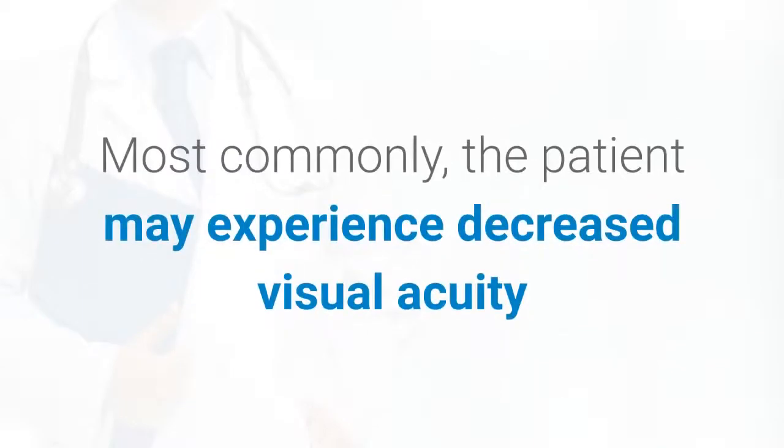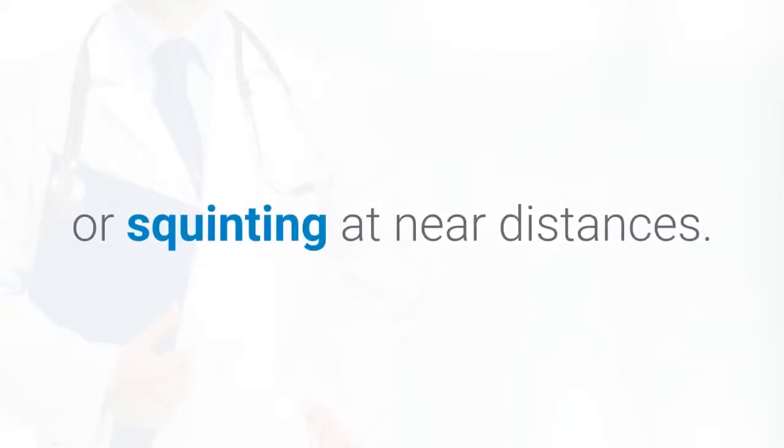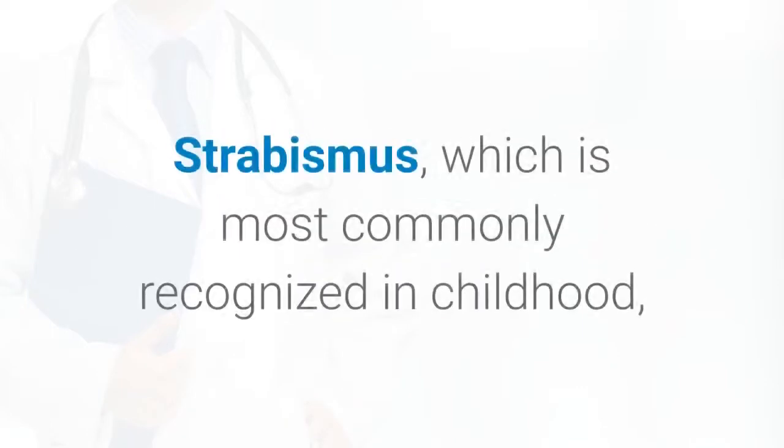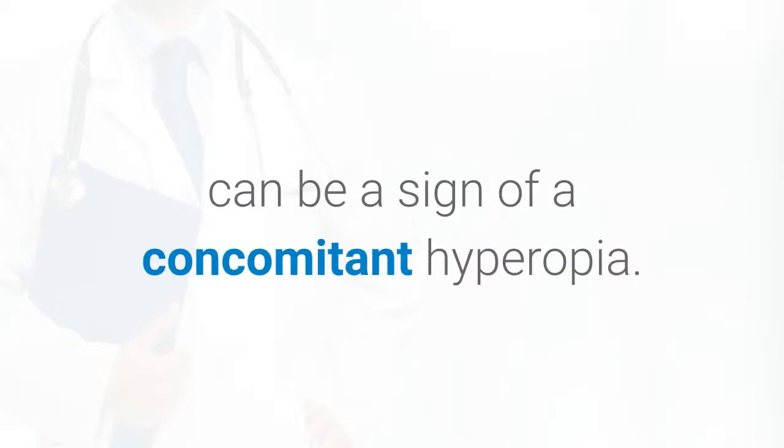Most commonly, the patient may experience decreased visual acuity or squinting at near distances. Strabismus, which is most commonly recognized in childhood, can be a sign of a concomitant hyperopia.